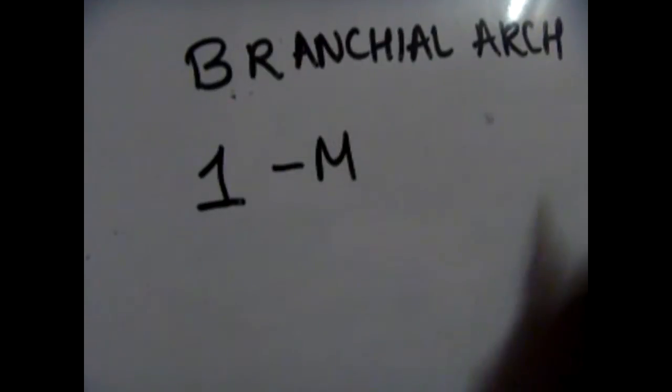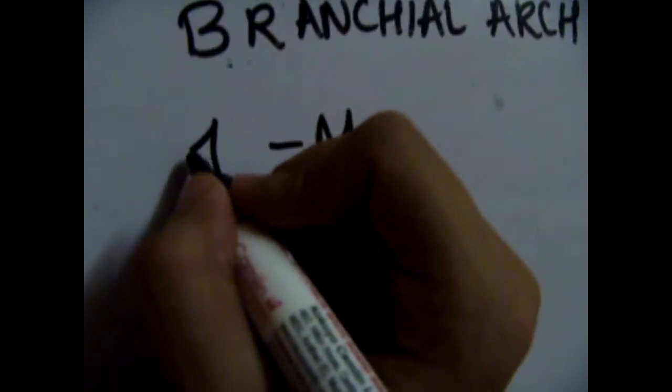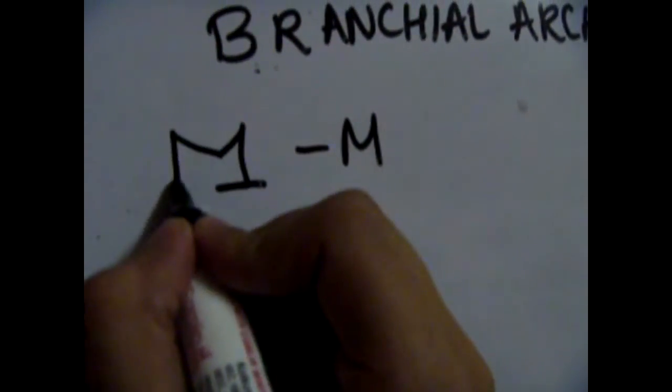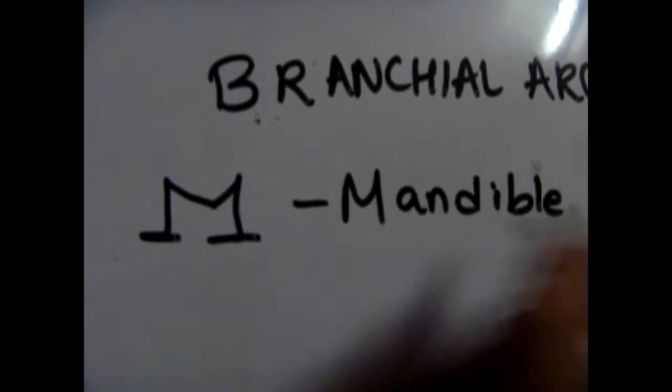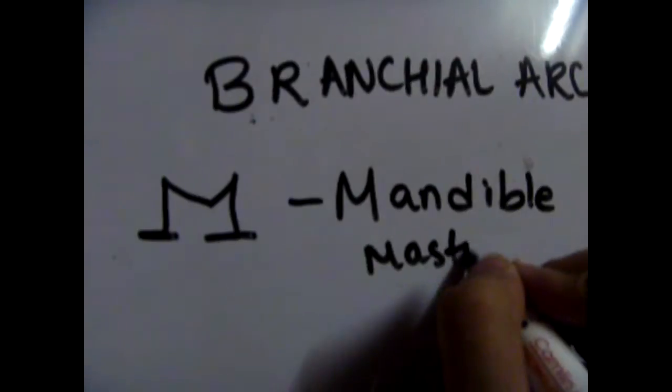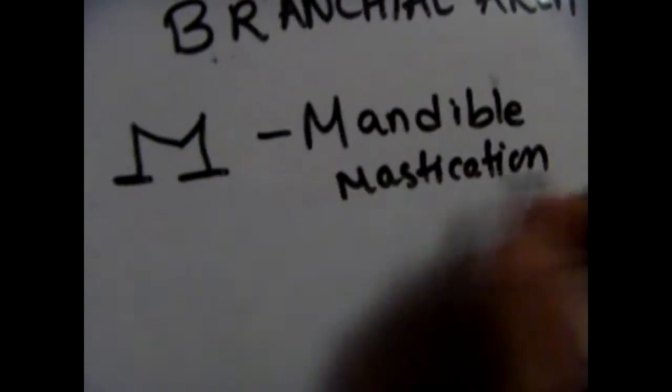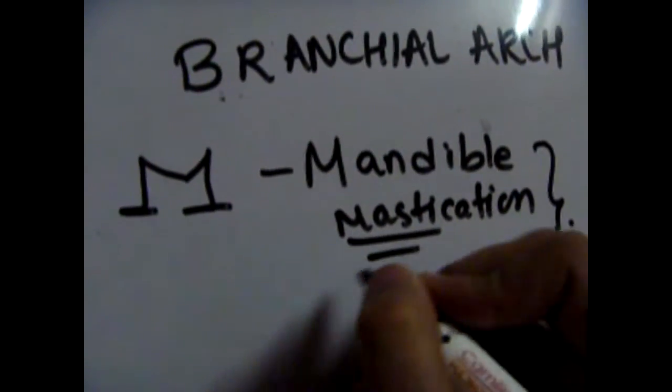You have to remember that first branchial arch is associated with M, and that's very easy to remember because when you make a mirror image of one, it kind of looks like an M. So that's very easy to remember: mandible and mastication.